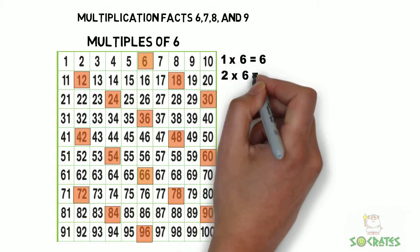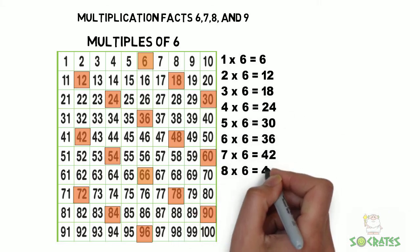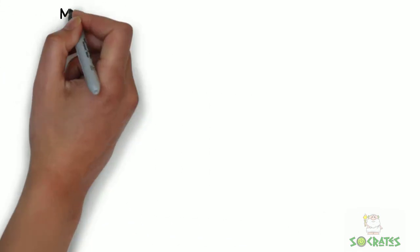Look at the pattern they make on the hundreds chart. One times six, and then each time you're increasing by six more. You need to memorize these answers so that you can know them more quickly when doing higher math.